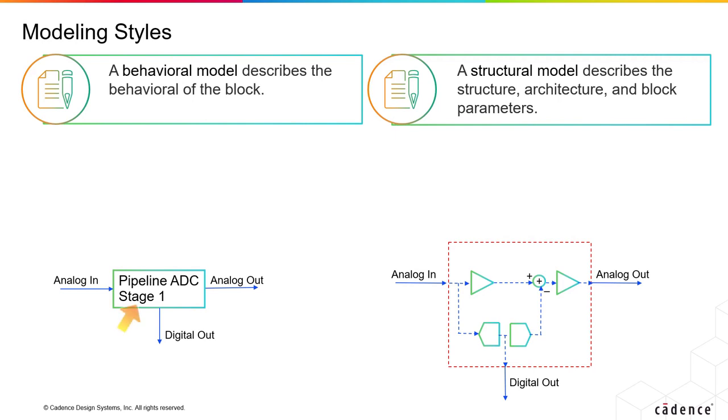Here is the design of pipeline ADC stage 1 denoted by a box, having an input analog in and outputs namely analog out and digital out. In the behavioral models, you can just write in the equations and say how are these outputs driven by that input. So in the behavioral style, you essentially describe what comes out based on what goes in.